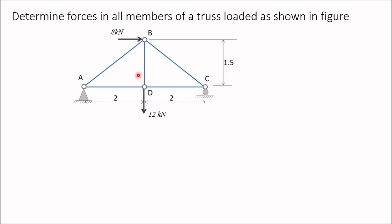Whenever we are required to determine forces in all the members, we will use method of joints. In method of joints, we will start from a joint having two members. There are two joints: joint A, having two members AB and AD, and joint C, also having two members BC and CD. These two joints are connected with the supports — a pin support and a roller support — so we require reactions at joints A and C first.